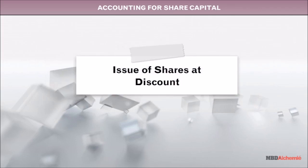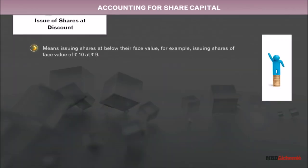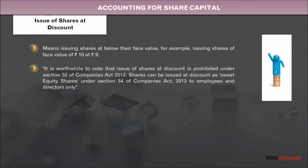Issue of Shares at Discount means issuing shares at below their face value — for example, issuing shares of face value of Rupees 10 at Rupees 9. It is important to note that Issue of Shares at Discount is prohibited under Section 53 of the Companies Act 2013. However, shares can be issued at a discount as Sweat Equity Shares under Section 54 of the Companies Act 2013, to Employees and Directors only.